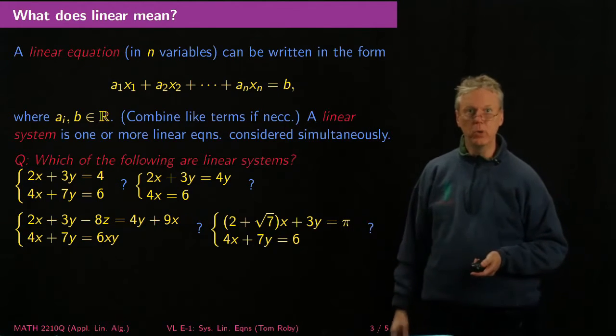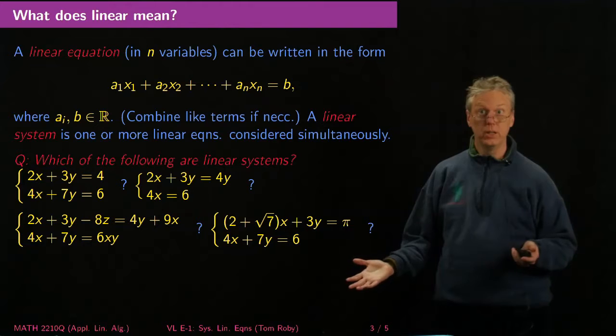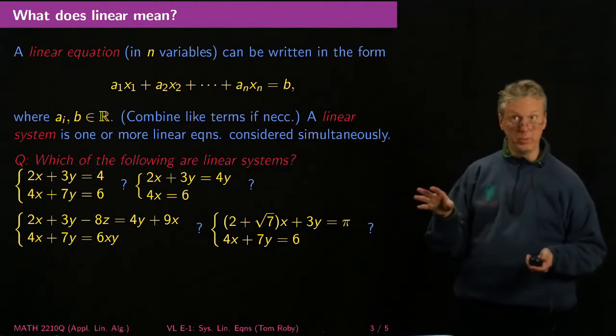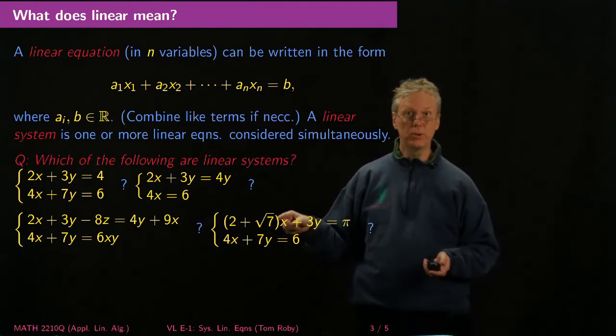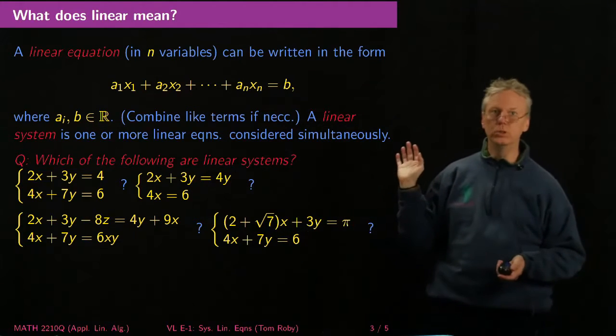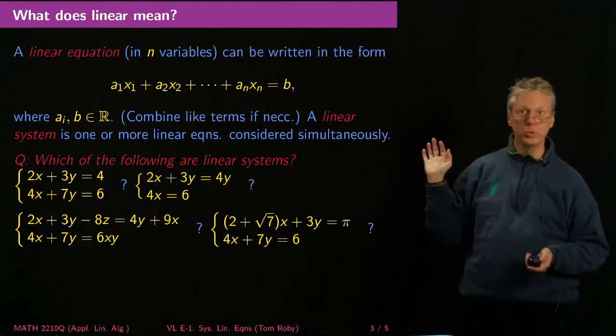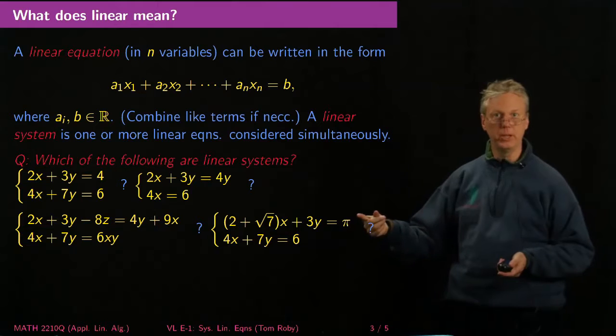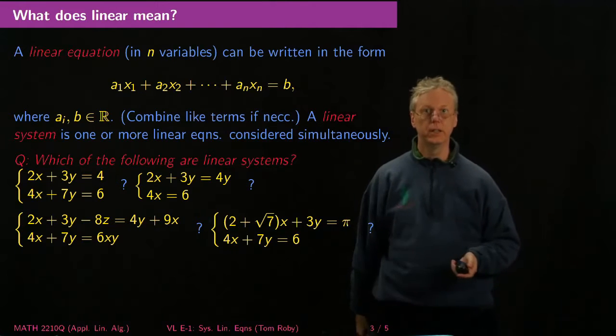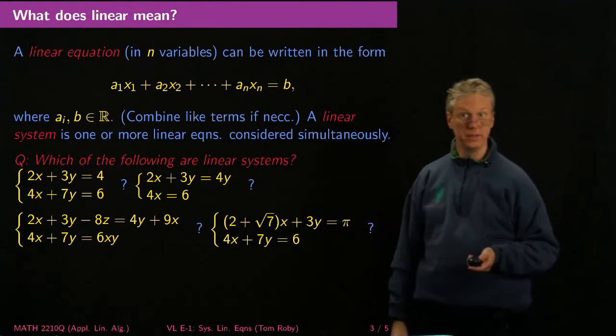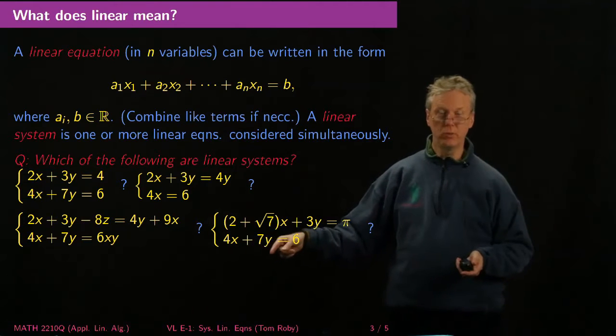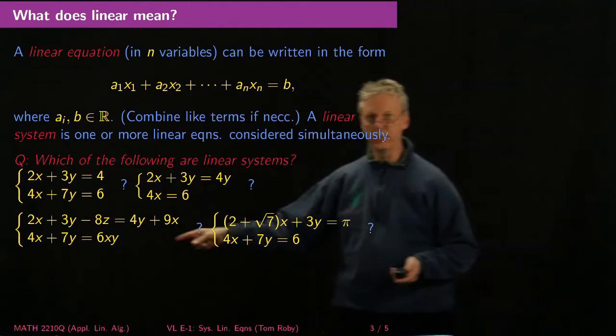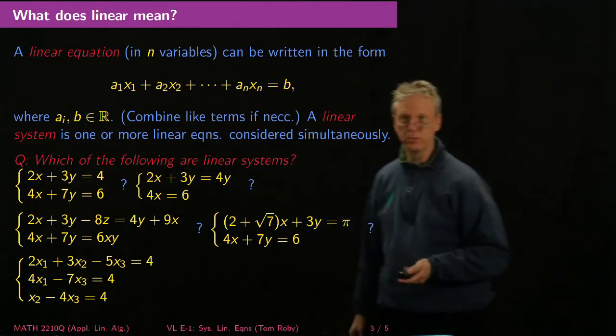And how about this? I've got square roots. But I don't have square root of a variable. If I had the square root of x, that would be a problem. Then it would no longer be linear. But the square root of 7 is just a garden variety, ordinary real number, and so that's fine to use as a coefficient. And π is the same thing. I mean here by π, I mean of course the constant that's approximately 3.14159. 4x + 7y = 6. That looks good. Okay, so that's a linear system. So the only one that wasn't a linear system was this guy with the quadratic cross term.